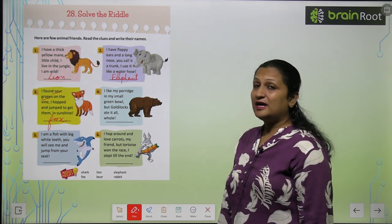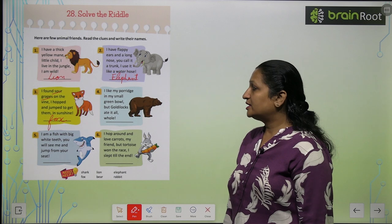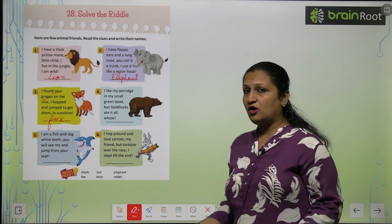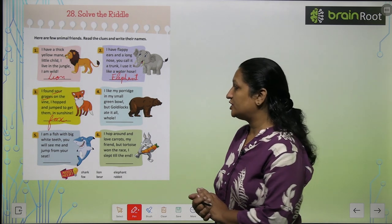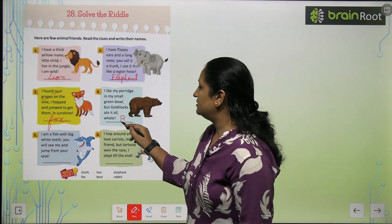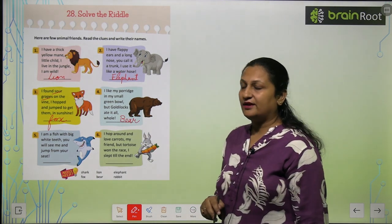I like my porridge in small green bowl. But goldilocks ate it all. Toh kis ke kha liye thai porridge? Ye tha bear. B-E-A-R. Bear.